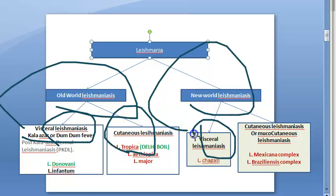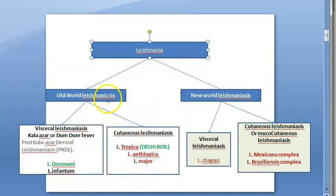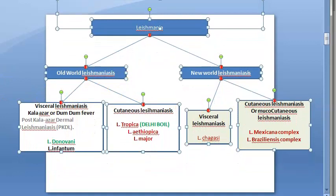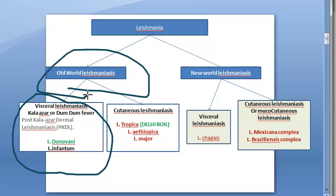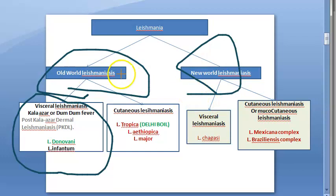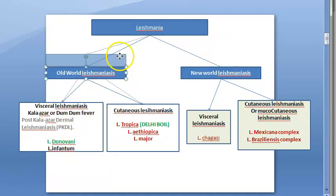In the Old World they divide it into visceral and cutaneous, and again in the New World they divide it as visceral and cutaneous, because the species causing these diseases in different places are different. You should focus mainly on visceral leishmaniasis — for example, kala-azar or Dum-Dum fever — which infects the Old World. Old World refers to places like India; New World refers to America.